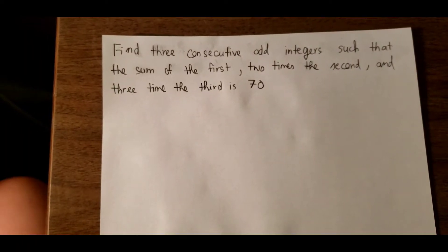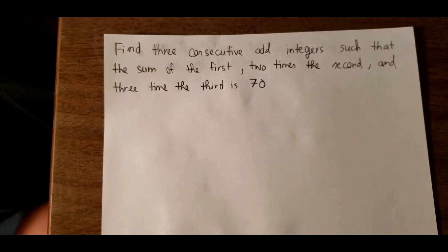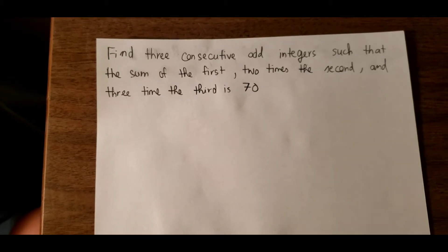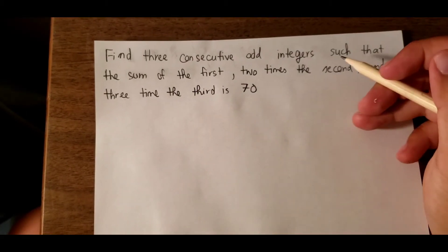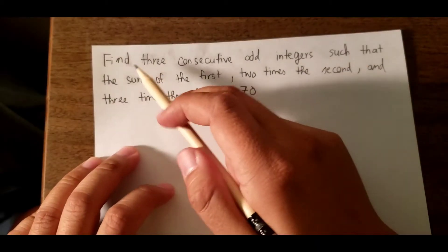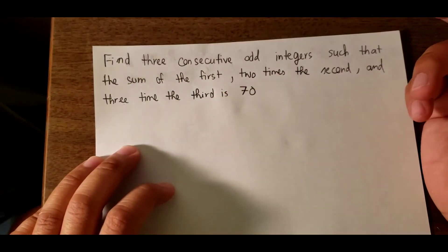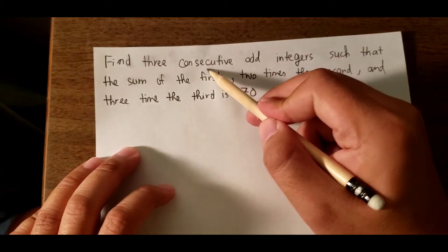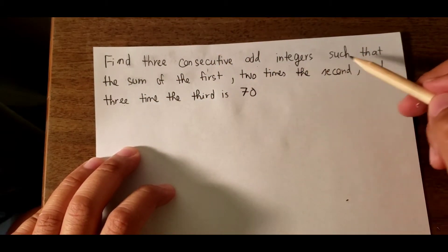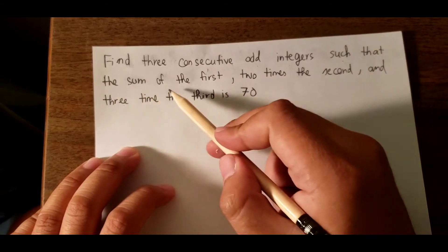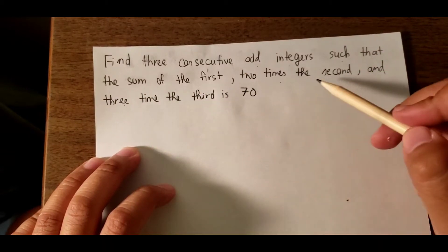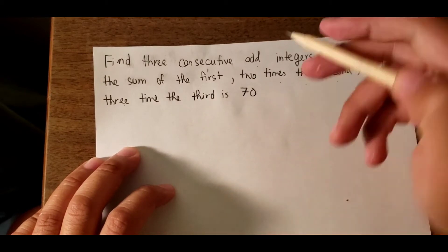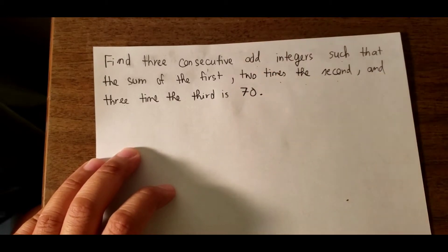Hello everybody, today I will show you how to make an equation from a word problem. I'll use a basic question. Let me read the question: Find three consecutive odd integers such that the sum of the first, two times the second, and three times the third is 70.